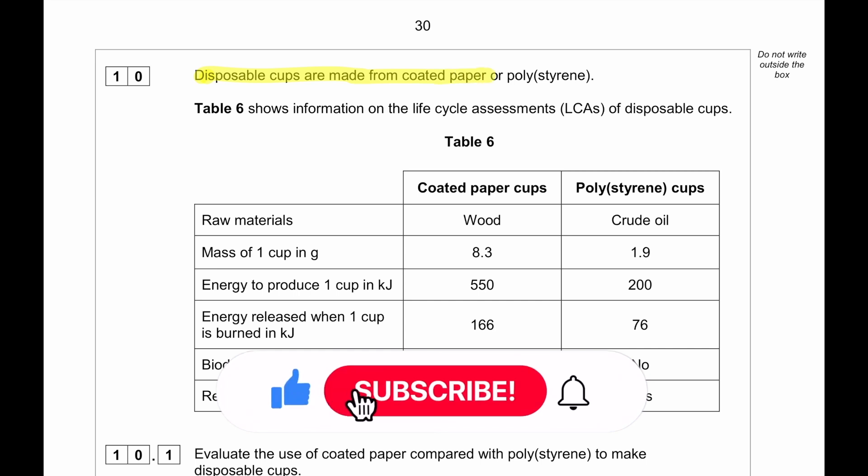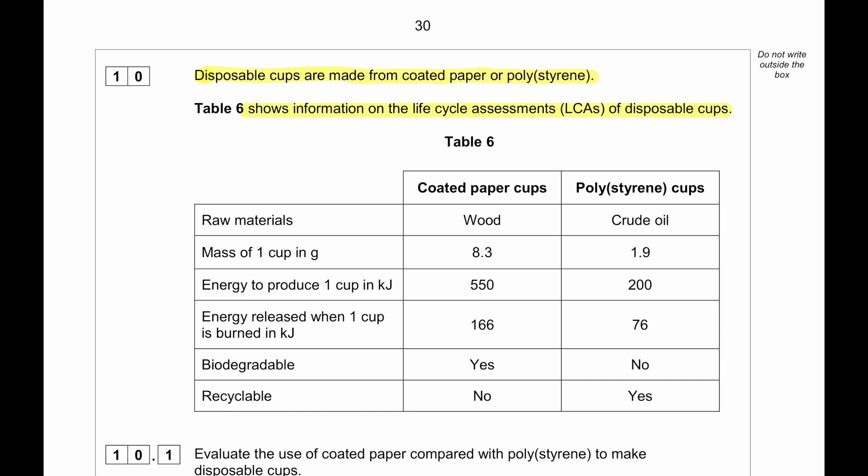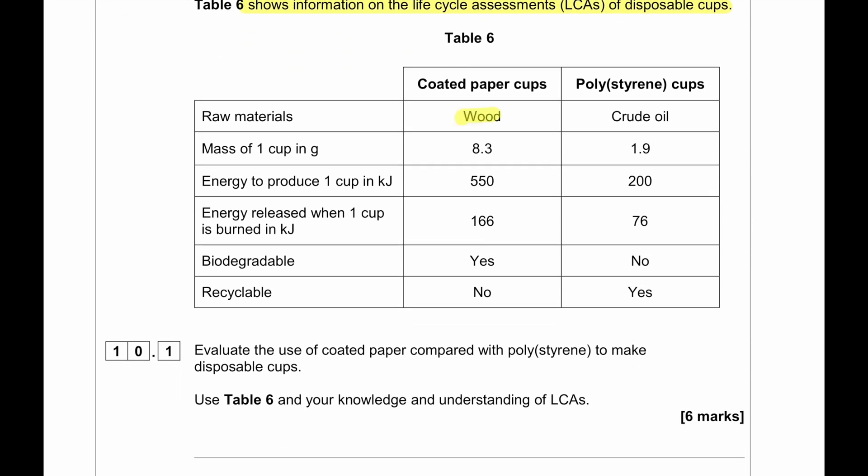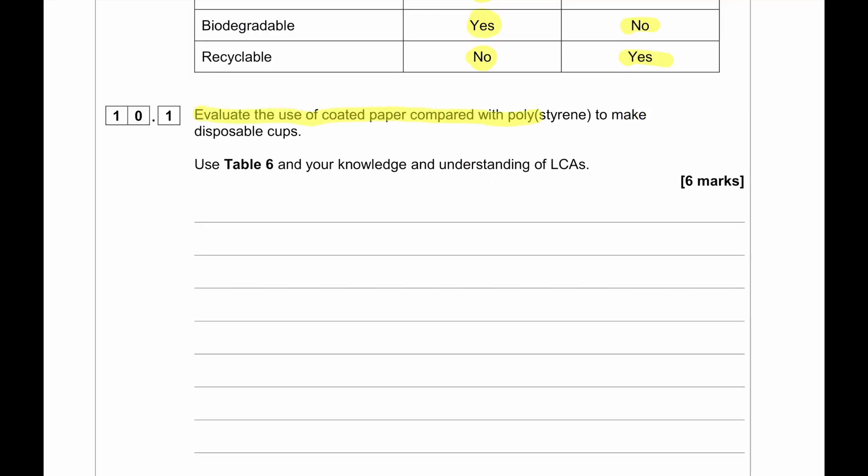Disposable cups are made from coated paper or polystyrene. Table 6 shows the information of the life cycle assessment, LCAs, of disposable cups. Wood: Mass of the cup, 8.3 grams. Recyclable, no. Biodegradable, yes. Energy when one cup is burned, 166. So we can actually burn and get rid of it. And from crude oil, the mass is 1.9. The energy needed is much less. Energy released when one cup is burned is much less. Not biodegradable. Recyclable, yes. Evaluate the use of coated paper compared with polystyrene to make disposable cups. We will use the knowledge of LCAs to answer a question like this.